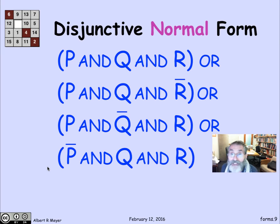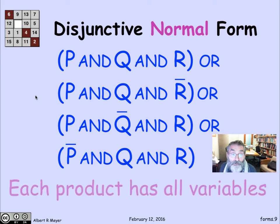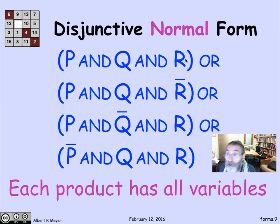This is called disjunctive normal form. A disjunctive form is simply any sum of products, but a disjunctive normal form is one in which every product has all three of the variables — so these are all filled out with a p and a q and an r, no omissions. In a general disjunctive form, you could leave out some of the terms; some of the conjuncts might be two or even one variable all by themselves.